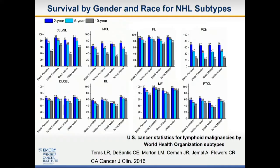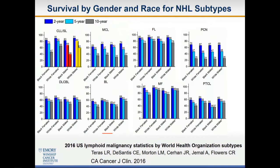When you look at different hematologic malignancies — chronic lymphocytic leukemia and diffuse large B-cell shown here — you can see the two-year, five-year, and ten-year overall survival statistics by race and gender. Comparing black males and white males, there are marked differences in five-year and ten-year overall survival across a number of hematologic malignancies. These are the types of disparities that we need to try and address where those marked differences occur.